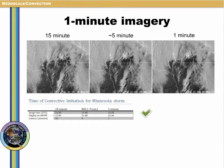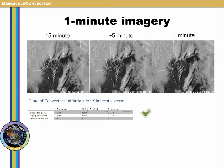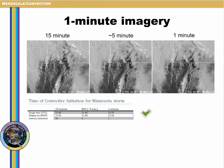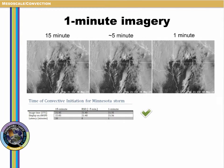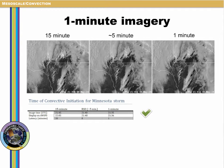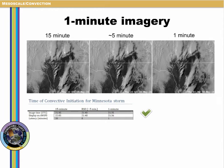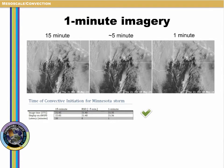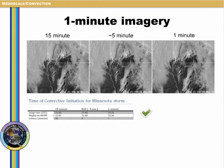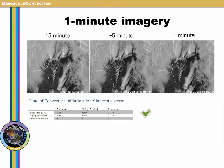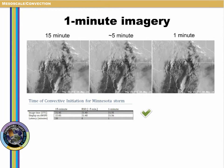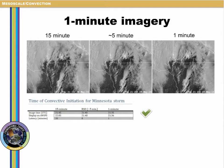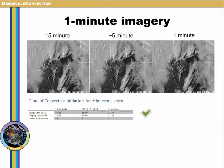The top row of the table lists the image time — the time you would be able to first identify a convective initiation for the storm of interest. As you may suspect, we get earlier lead time on identification of convective initiation. However, this is only part of the story. The other factor is when the imagery is displayed on your AWIPS. The latency in 15-minute mode is approximately 20 minutes, which improves substantially in RSO mode to approximately 8 minutes.